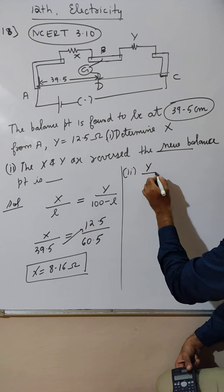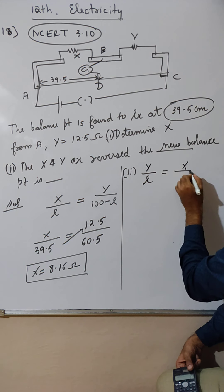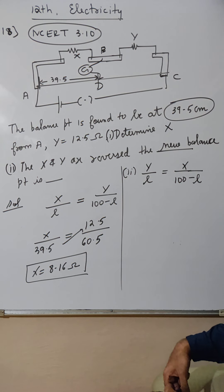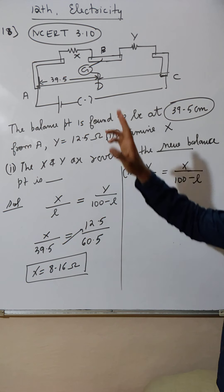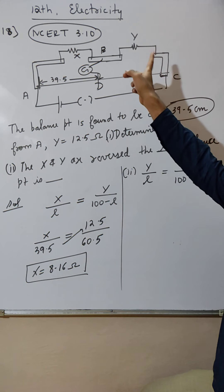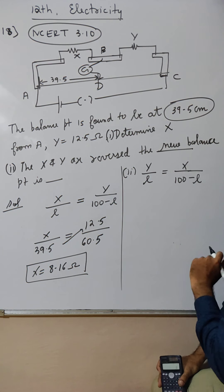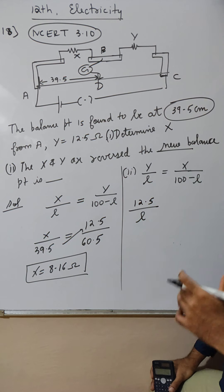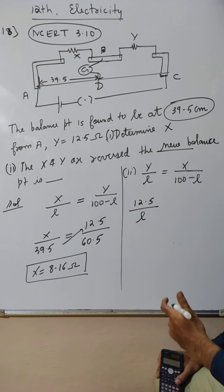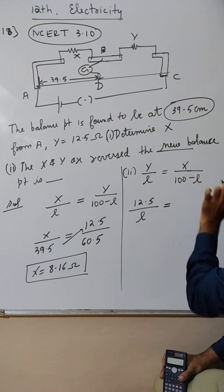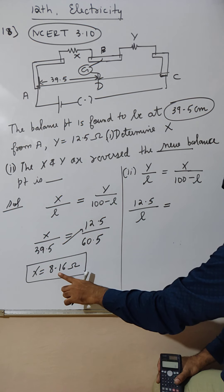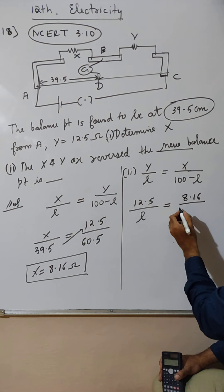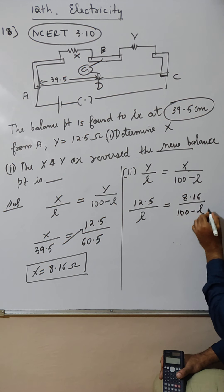So now Y by L equals X by 100 minus L. The balance point will change. This goes there, that comes here. Y is 12.5. L is unknown, that's what we need to find. X is 8.16. 100 minus L is unknown.